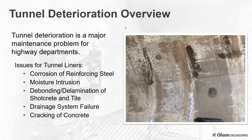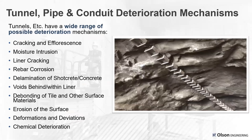Let's jump right into tunnel deterioration — most of these apply to pipes and conduits as well. What kind of issues do you have in tunnels? Typically you have corrosion of rebar if there's water flowing in, moisture intrusion related to that corrosion, any kind of debonding of shotcrete liners, tile, or other materials on the face of the tunnel liner. You can have drainage system failure, cracking of concrete, and efflorescence — white materials, little stalactites, soda straws — which is related to moisture intrusion.